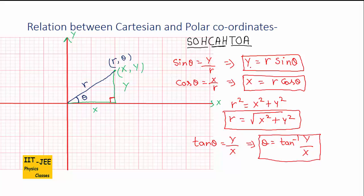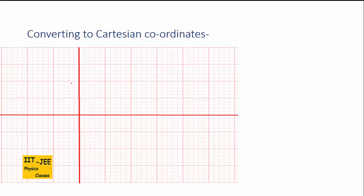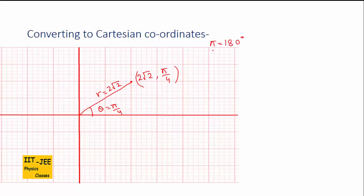We now have all four relations for x, y, r, and theta, which we can use to convert between coordinate systems. Let's convert polar coordinates to Cartesian. Suppose a point is given in polar coordinates as 2√2, π/4. That means r equals 2√2 and theta equals π/4. Since π equals 180 degrees, π/4 means 45 degrees.